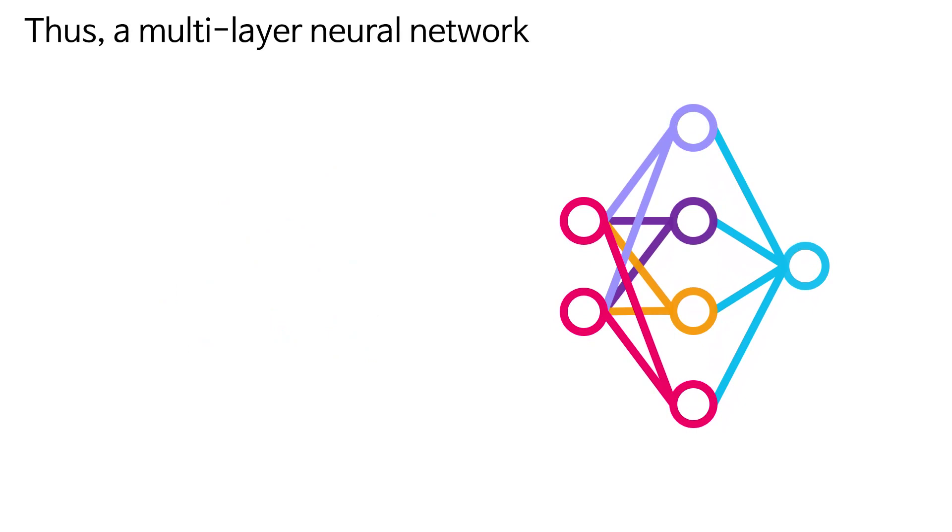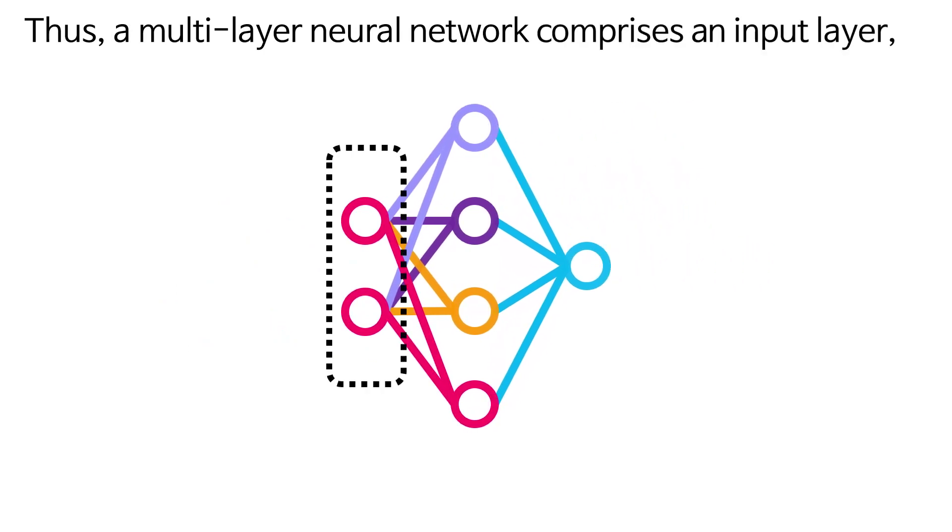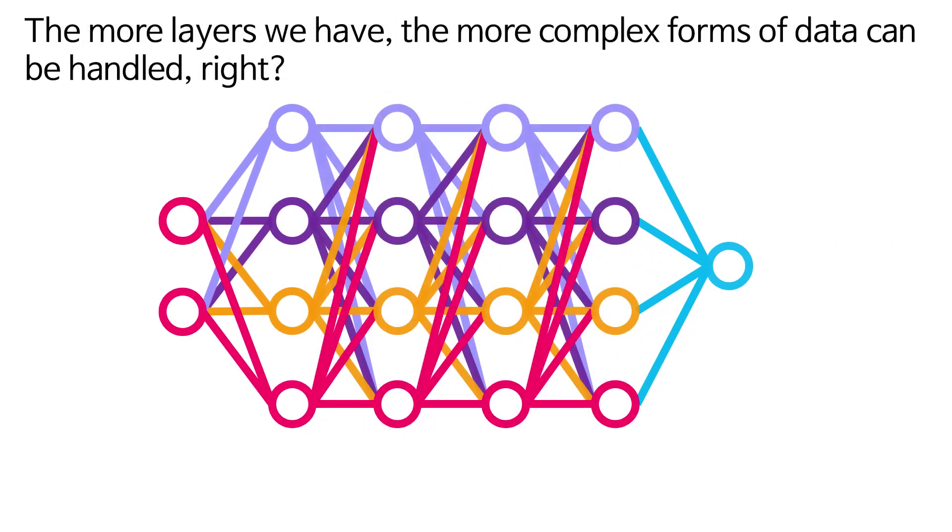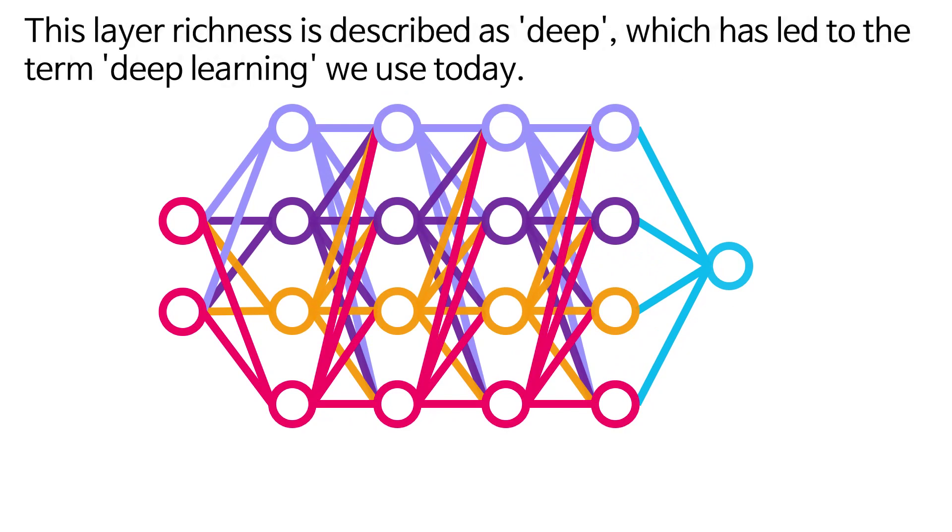Thus, a multilayer neural network comprises an input layer, one or more hidden layers, and an output layer. The more layers we have, the more complex forms of data can be handled. This layer richness is described as deep, which has led to the term deep learning we use today.